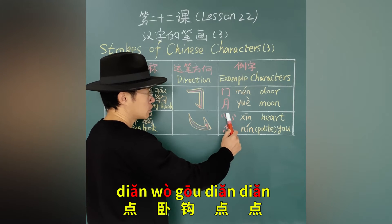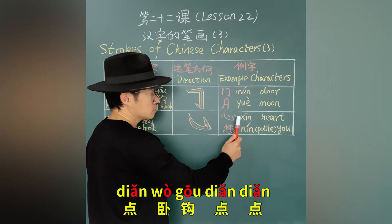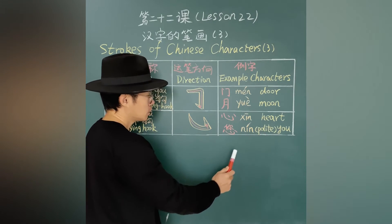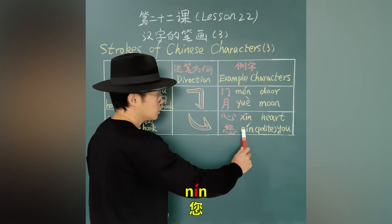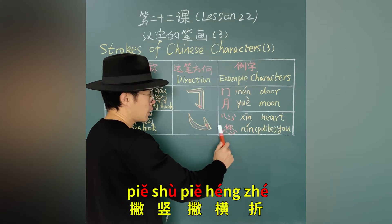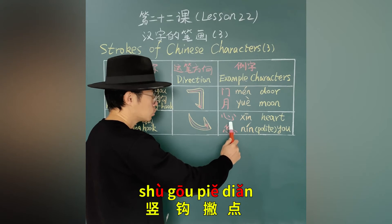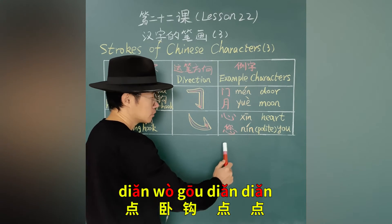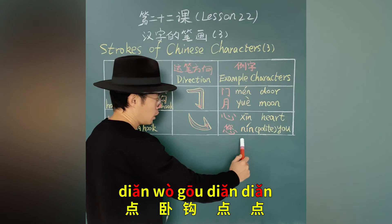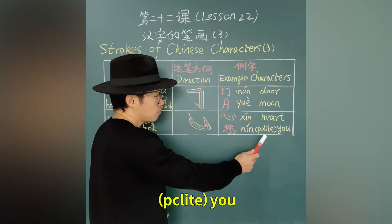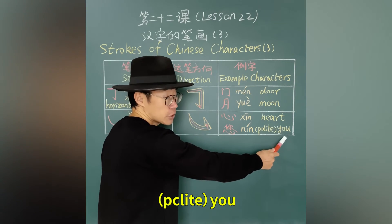卧沟. 点点心 — heart. 那阴您, 撇树, 撇横折. 竖沟, 撇点点, 卧钩点点 — 您. Hold it — you.